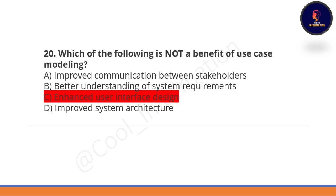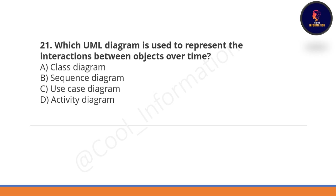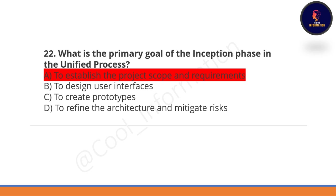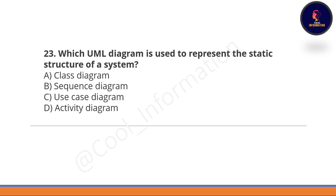Next question: which UML diagram is used to represent the interaction between objects over time? A sequence diagram is used for that. Option B is correct. Next question: what is the primary goal of the inception phase in the unified process? Option A is correct — to establish the project scope and requirements.